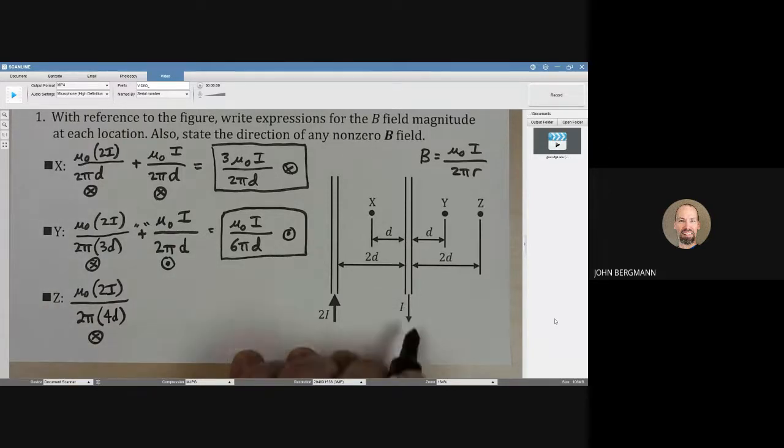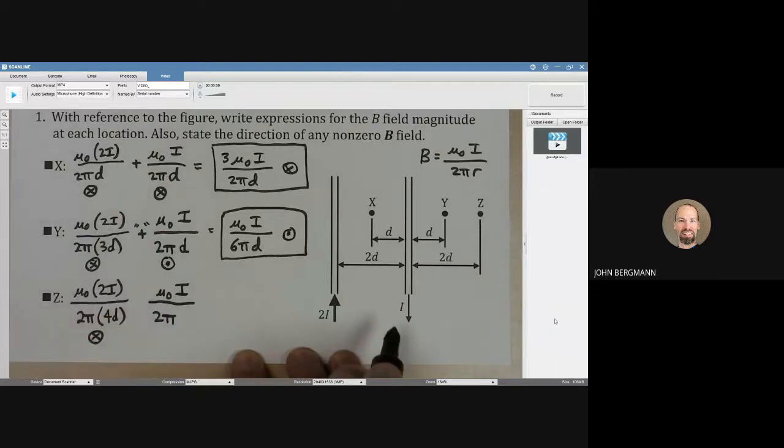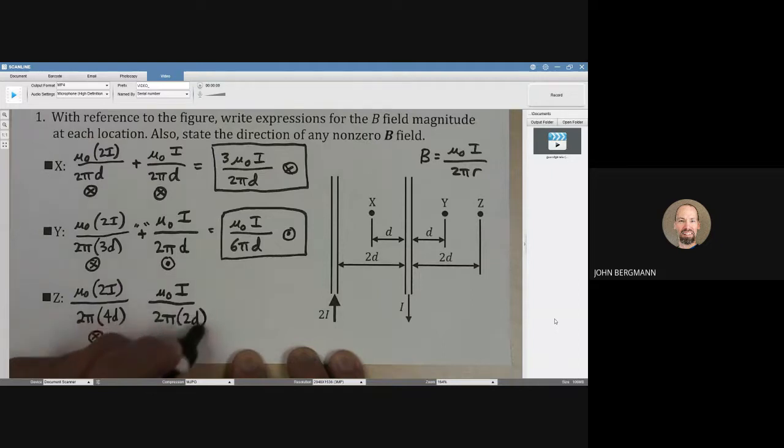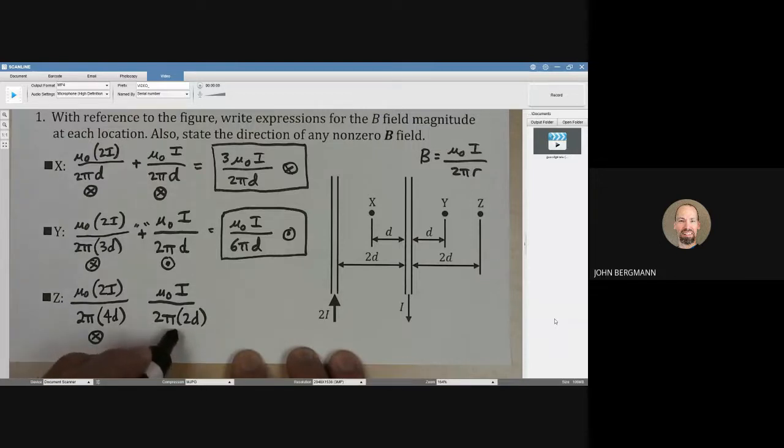Then let's take the contribution from the other one. That's going to be μ₀ times simply i divided by 2π. And how far away are we from that? That's going to be 2d. And in what direction does that act? That's going to be out of the page.